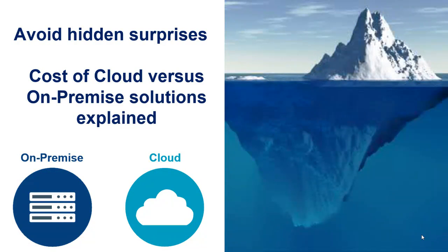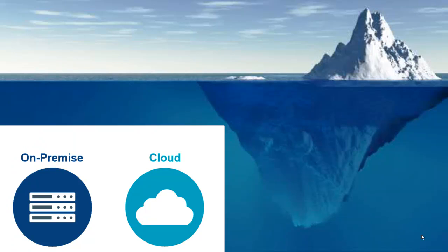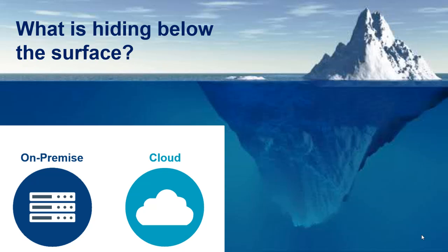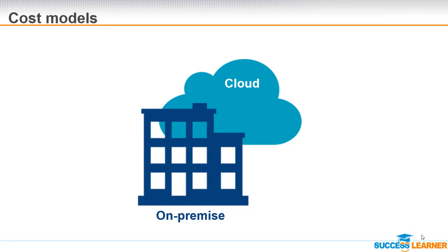Avoid hidden surprises: cost of cloud versus on-premise solutions explained. The iceberg picture is used to illustrate what is hiding below the surface — meaning the activities and costs that are less obvious and hidden below the waterline, versus the tip of the iceberg which represents what is clearly visible.